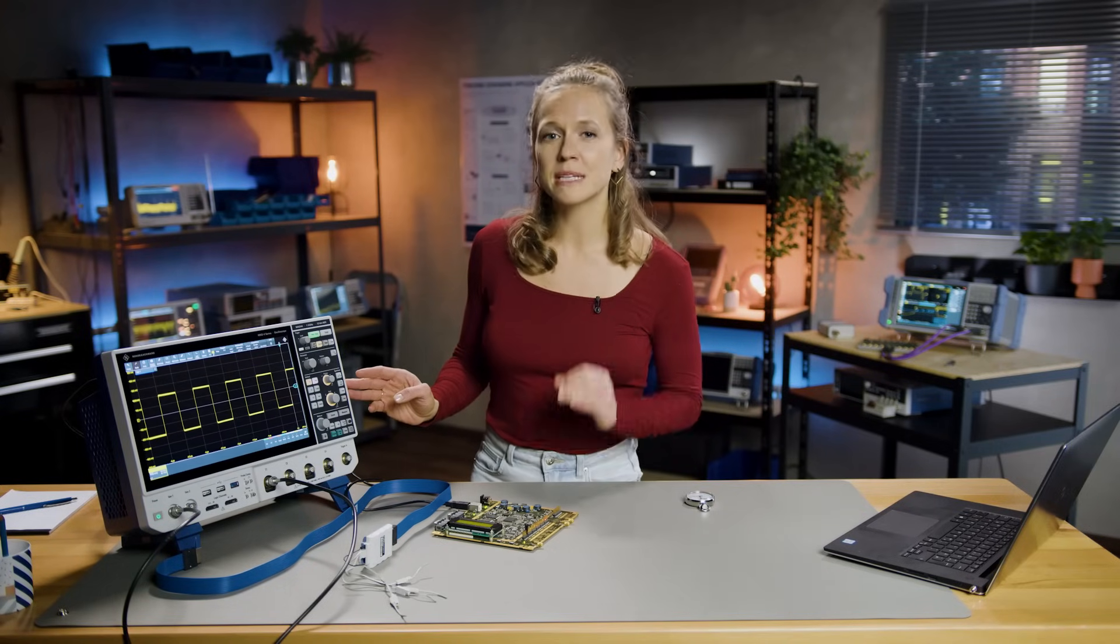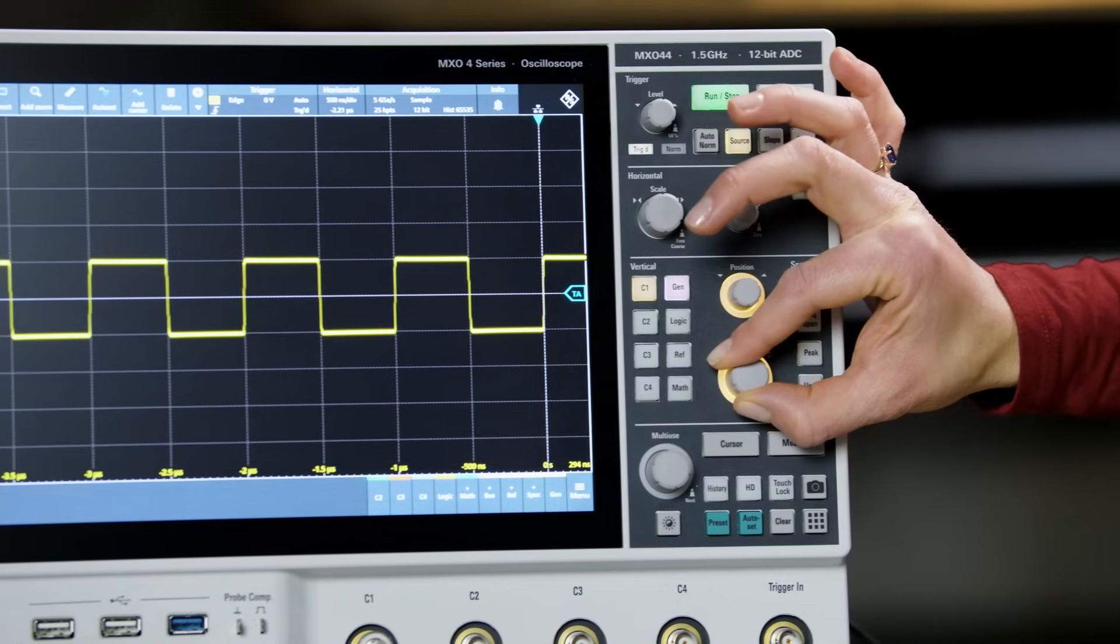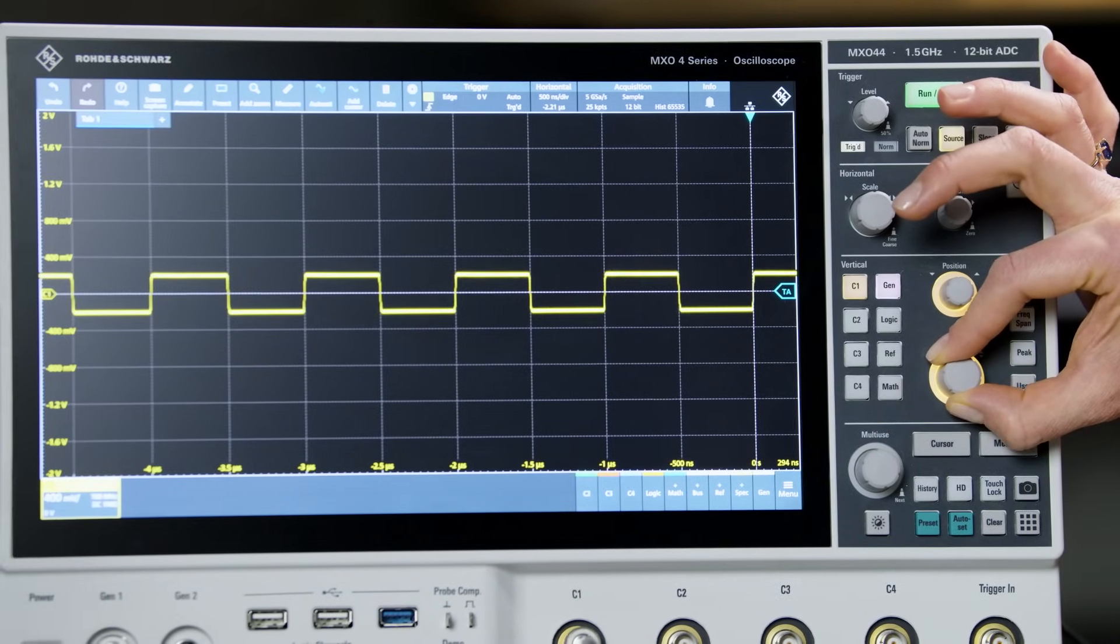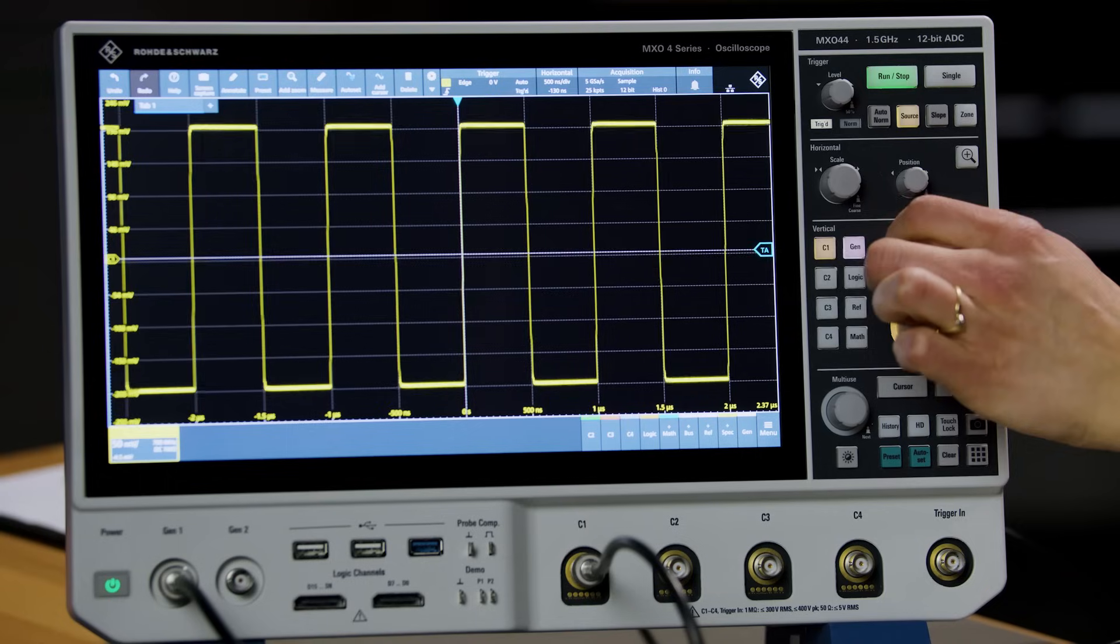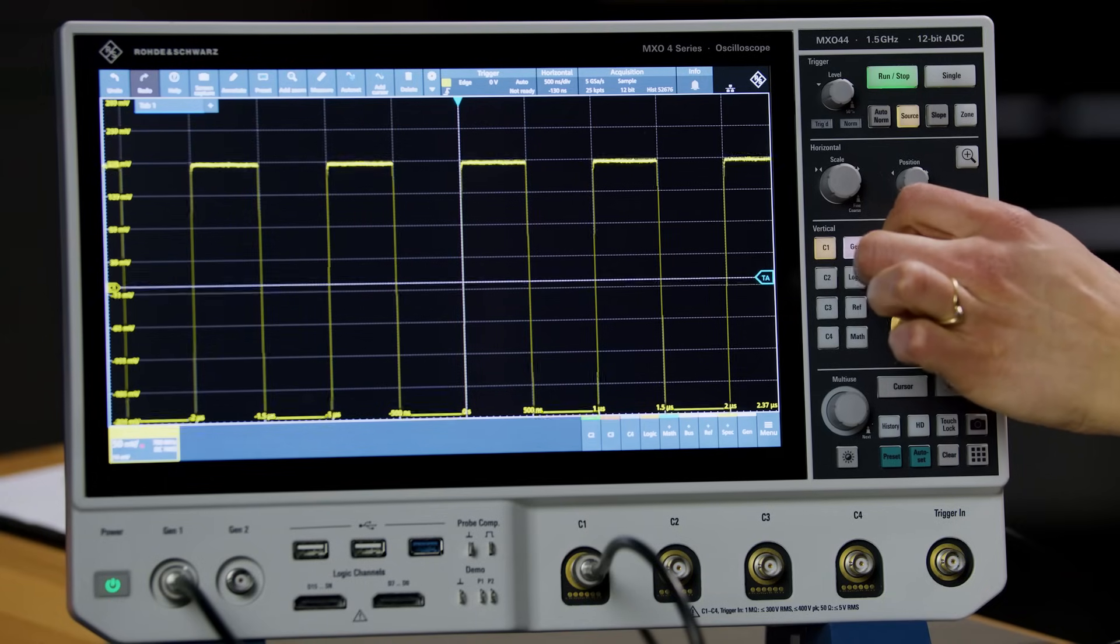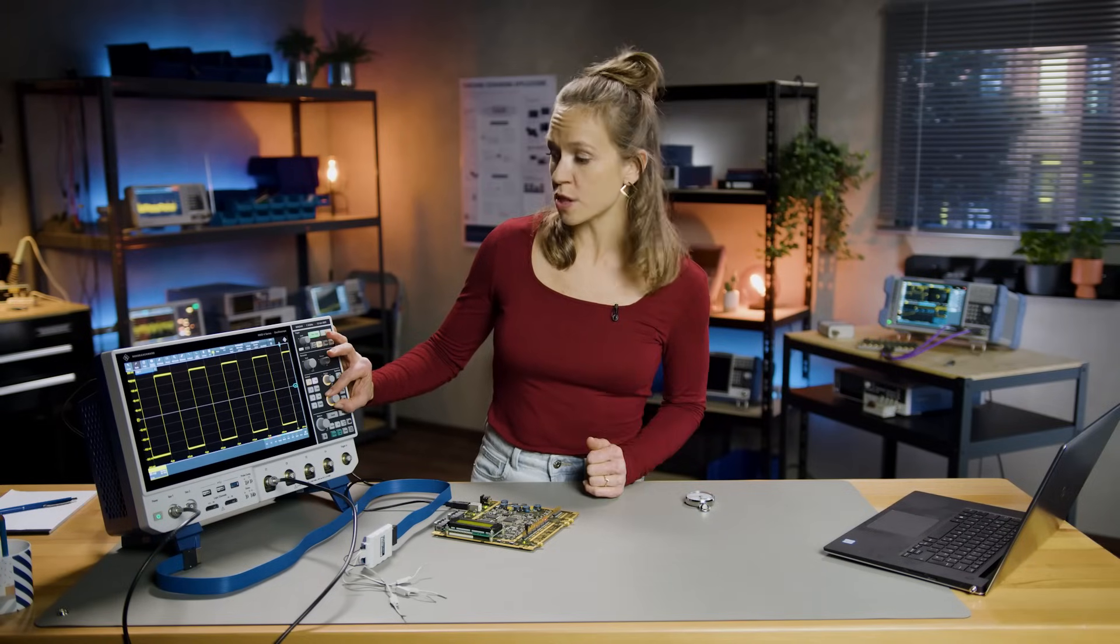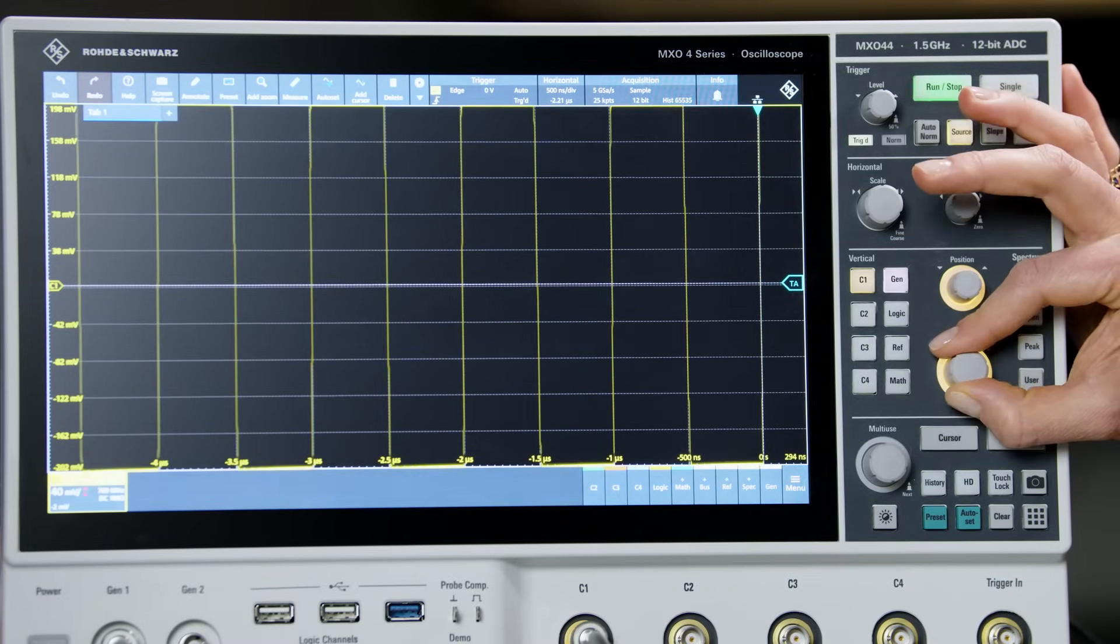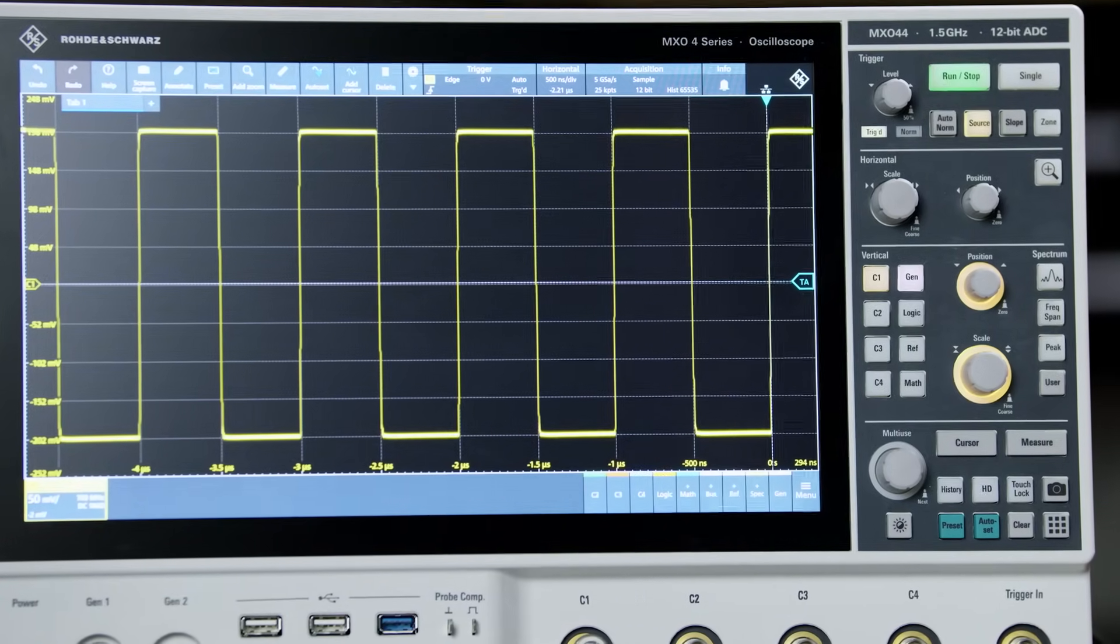When configuring the vertical system, it is important to remember to maximize the display of the waveform on the screen. Look what happens when I adjust the voltage per div setting. The higher the voltage per div is selected, the smaller the representation of the waveform. Use the position knob to move the waveform up and down on the screen. To make best use of the scope, you need to position the highest and lowest points on the waveform as close as possible to the top and the bottom of the screen, without clipping the waveform. With maximum vertical scaling, it is easier to detect small details or defects in a waveform.